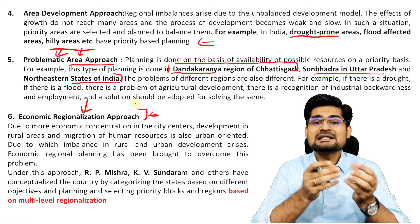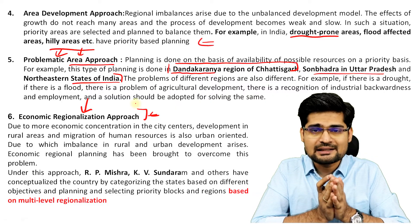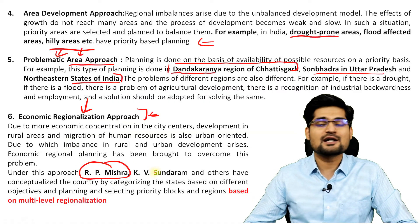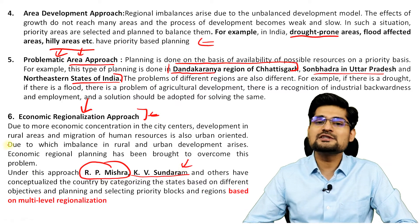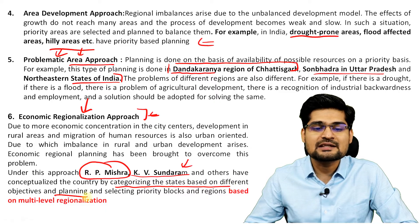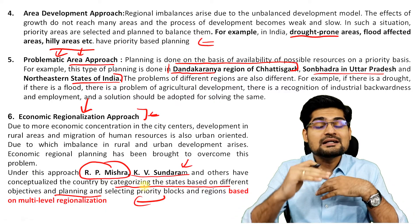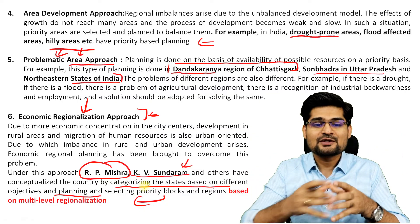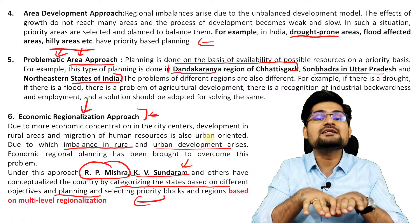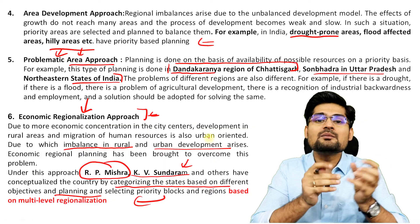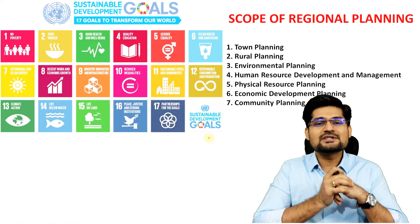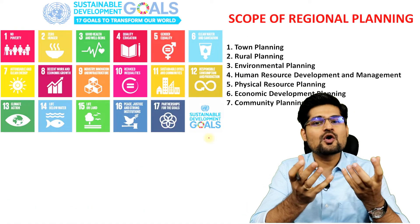The sixth approach is economic regionalization. Economic growth is concentrated at particular points and does not happen uniformly, creating disparities. Scholars like Professor R.P. Mishra and Professor K.V. Sundaram have conceptualized this approach in India by categorizing states based on their objectives and planning, giving priority to a multi-level planning approach and economic integration to address the imbalance in rural and urban development and economic marginalization.